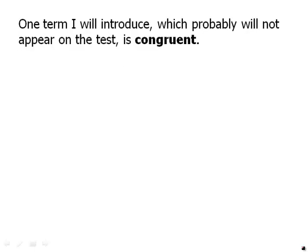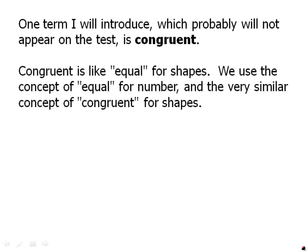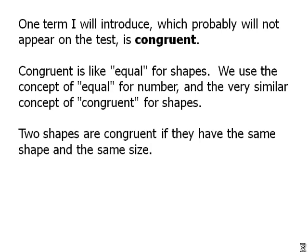One term I will introduce which probably will not appear on the test is congruent. Congruent is like equal for shapes. We use the concept of equal for a number and the very similar concept of congruent for shapes. Two shapes are congruent if they have the same shape and the same size. They don't have to have the same orientation. So for example, the purple and the green shapes here are congruent. One is flipped over from the other. One you could say is a right-handed version and the other is a left-handed version. But it is the same shape fundamentally. These two are congruent even though they have different orientations.